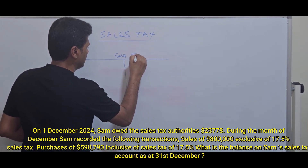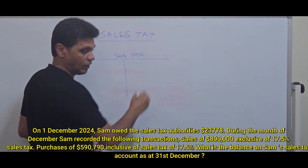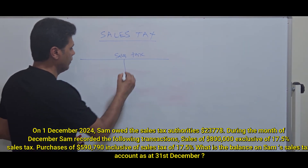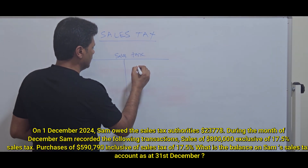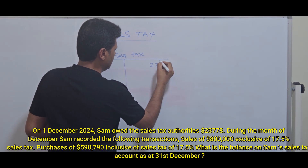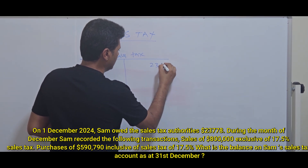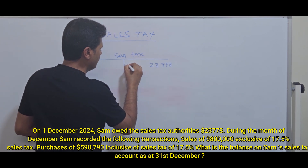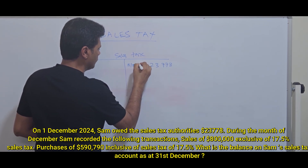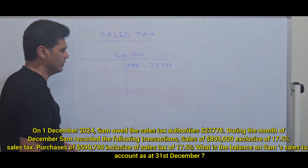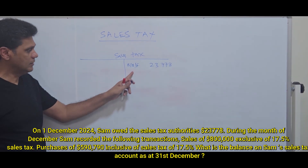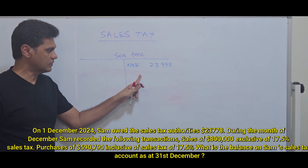The opening balance of the sales tax account is $23,778, which is payable to the tax authority. This is the opening balance.